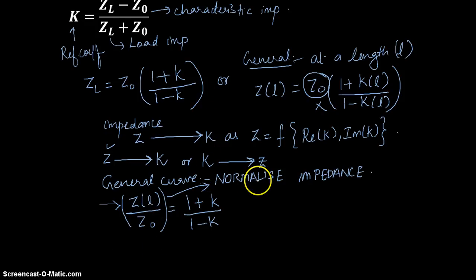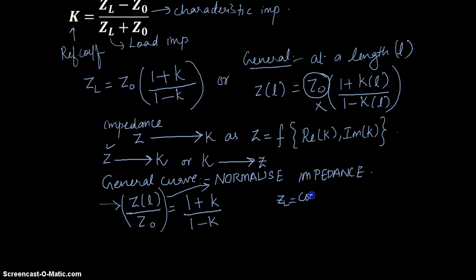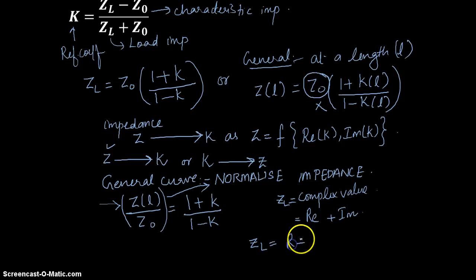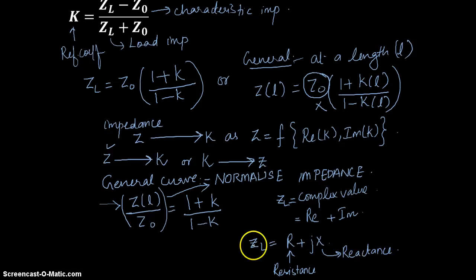By performing this normalization operation we are not going to make any changes to the value of k. So the normalized impedance can be represented as ZL itself — ZL is a complex number, a complex value. This complex value will also have a real part and an imaginary part. So the normalized ZL value can be written as R plus jX, where R is the real part called resistance and X is the imaginary part.